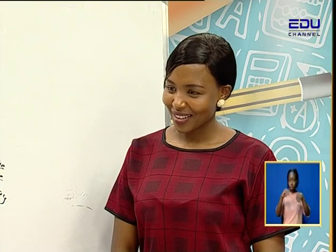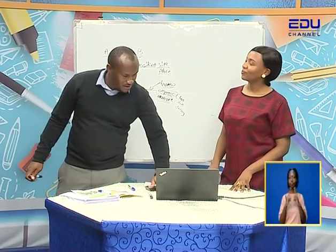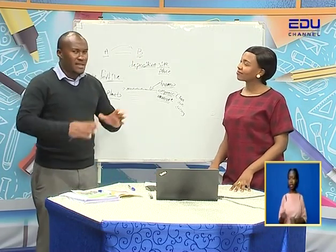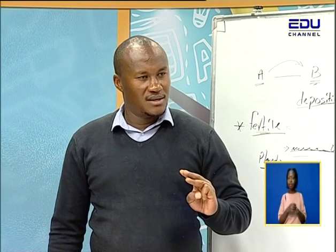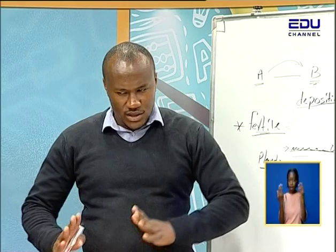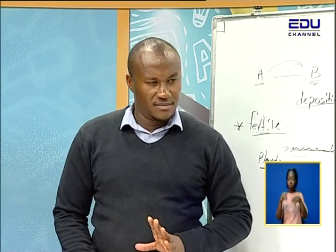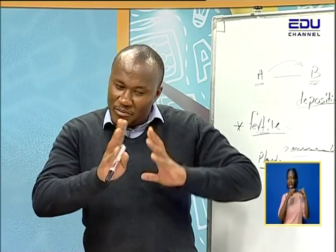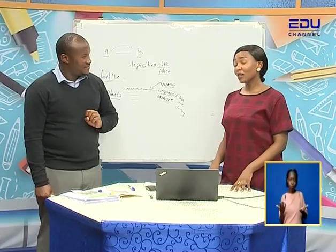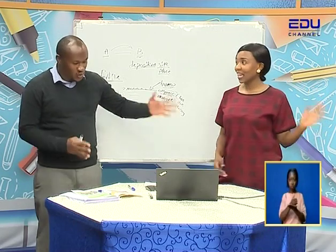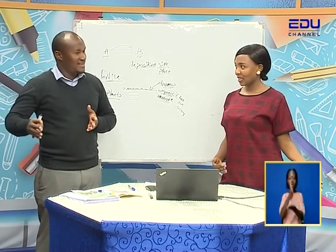Soil erosion is the carrying away of the top fertile soil from one place to another. The place it is transported to is the deposition site. The agents that transport soil include water — which carries soil by flowing — and wind. Water has to flow to carry the soil away.